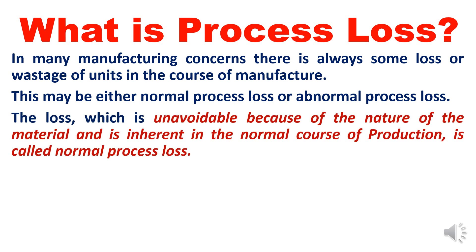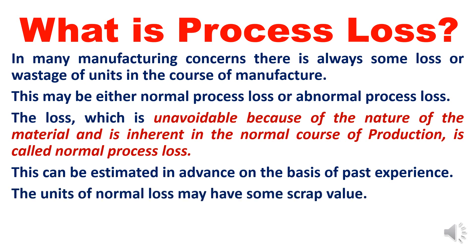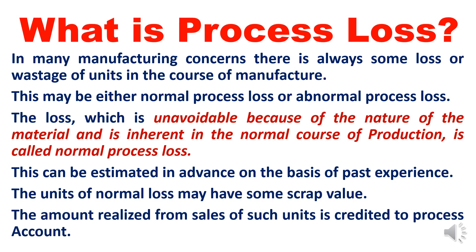The loss which is unavoidable because of the nature of the material and inherent in the normal course of production is called normal process loss or normal loss. This can be estimated in advance on the basis of past experience. The units of normal loss may have some scrap value — whatever normal loss we get, we can sell it off as scrap, generating revenue. The amount realized from sale of such units is credited to the process account.